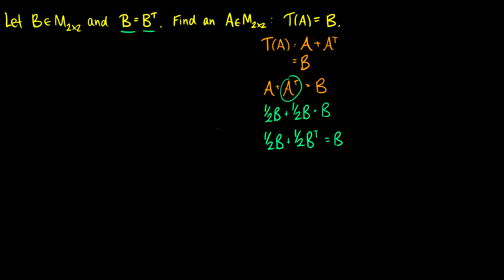So if I put in one-half B as our A, then I get B back. So the A I've chosen is equal to one-half B. So that's how you find the B in the vector space of two-by-two matrices such that the transformation on A gives you back B.